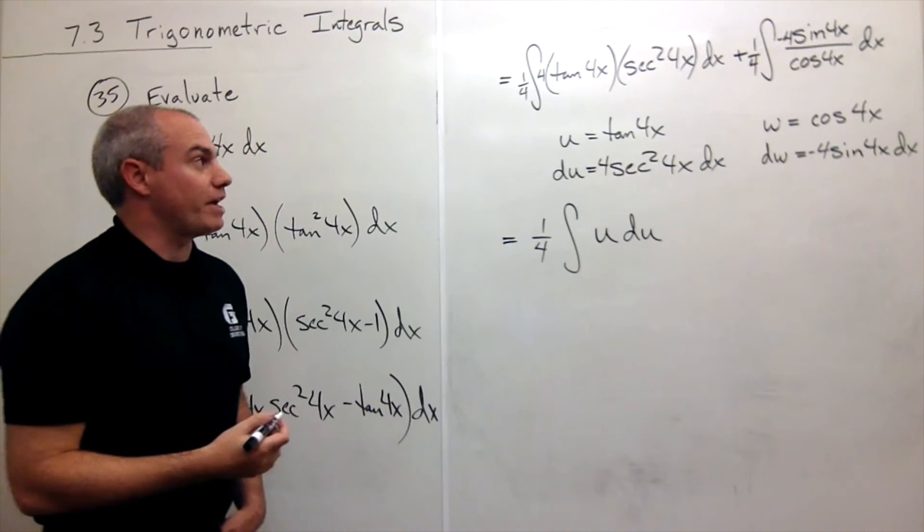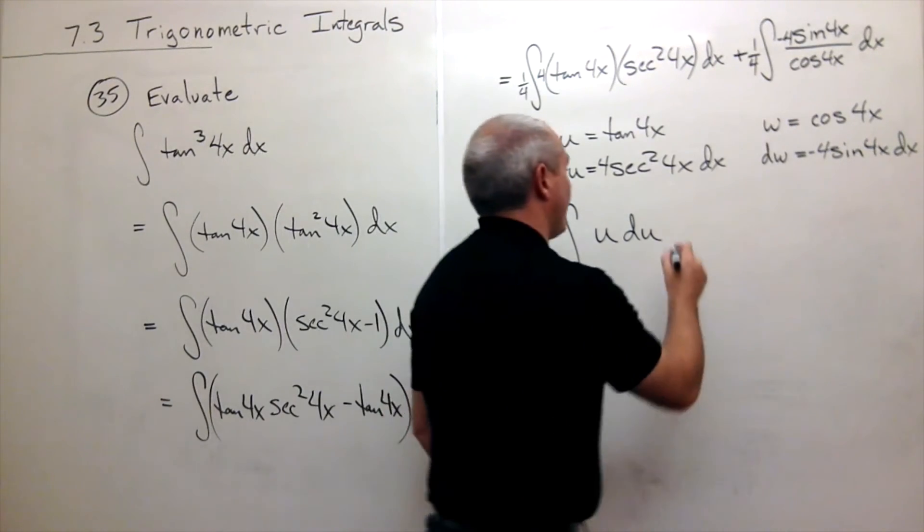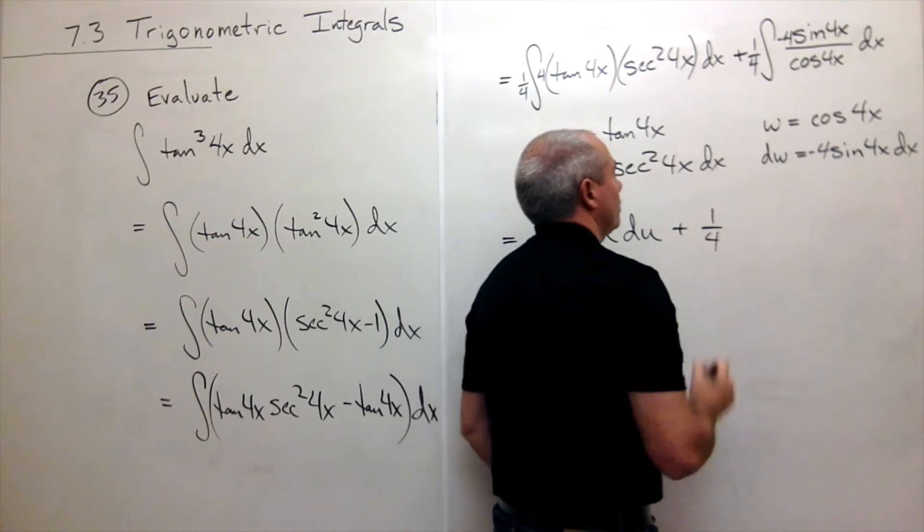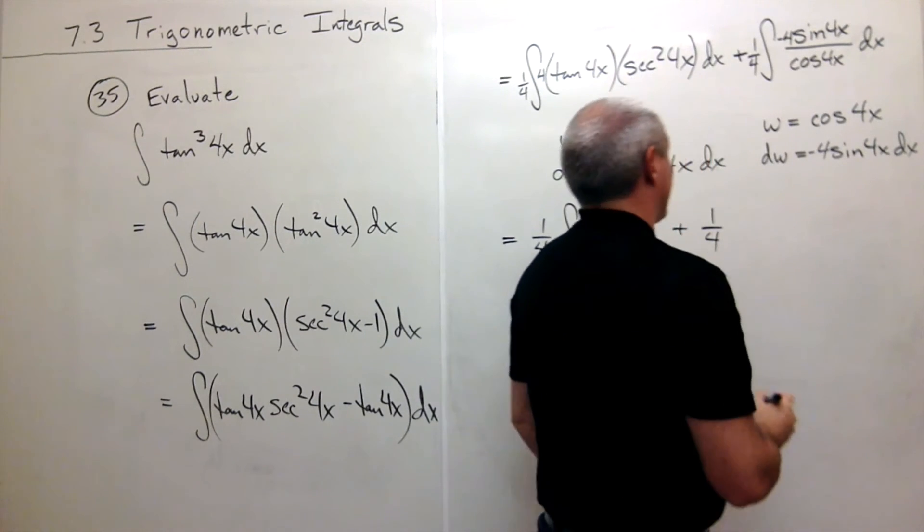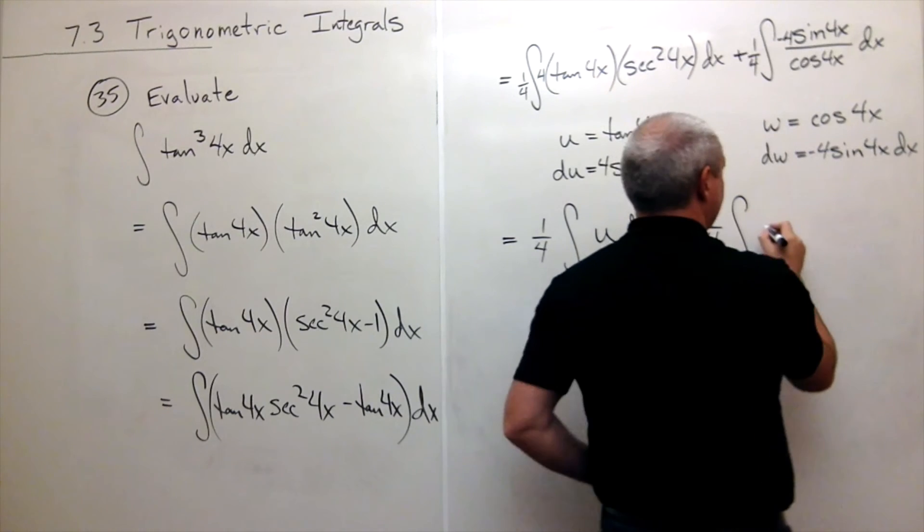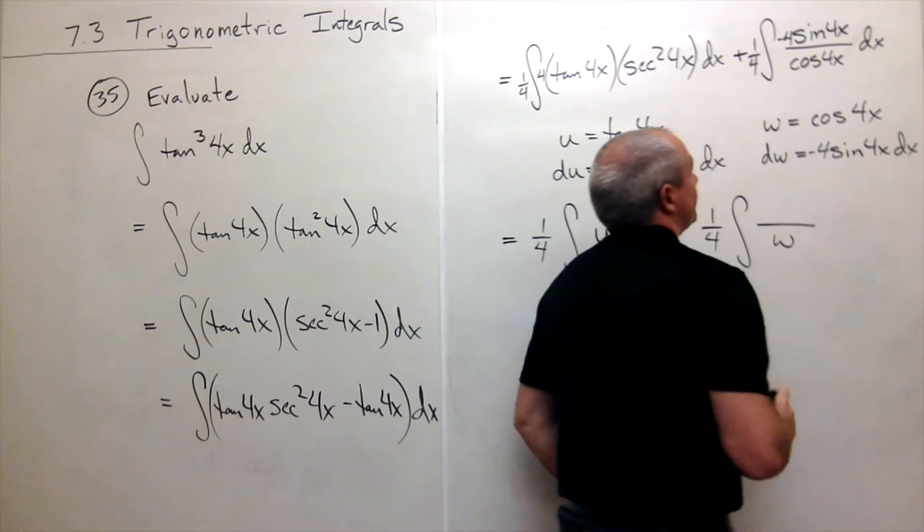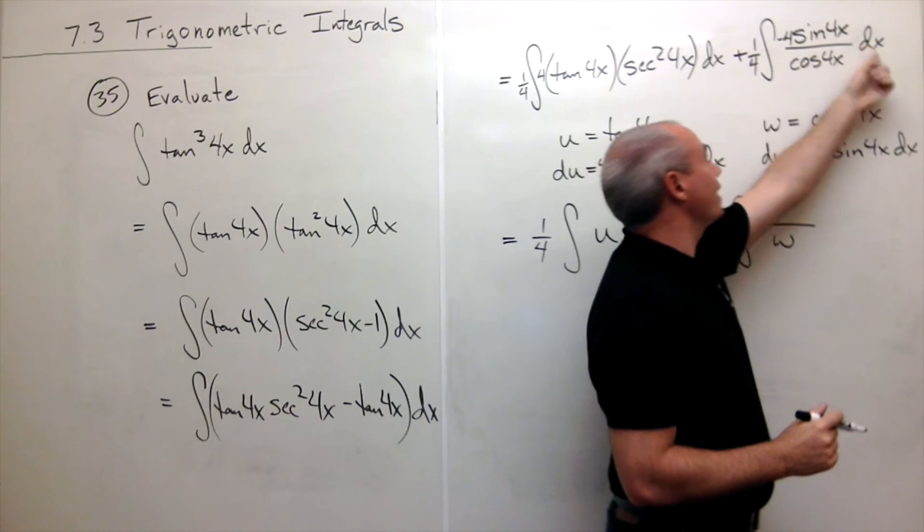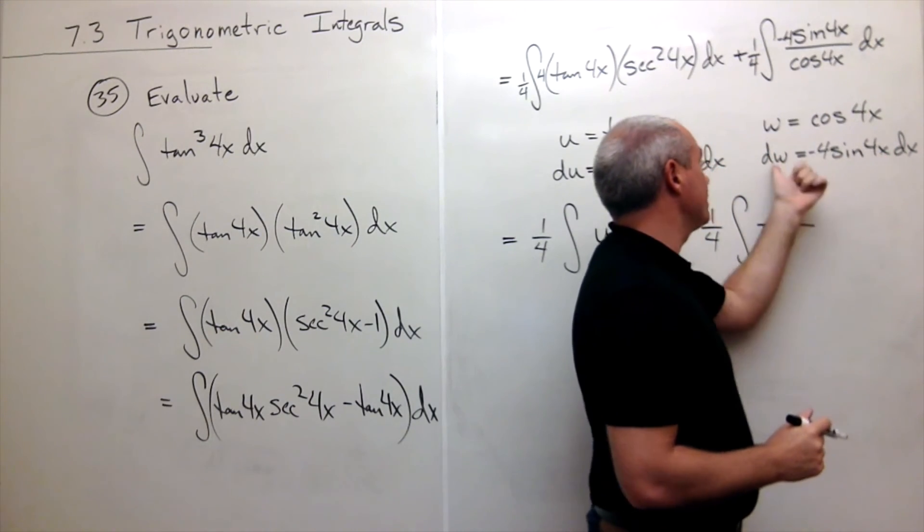And now I'm ready to make my substitution. I have a plus 1 fourth integral of, on the bottom I have w. On the top I have negative 4 sine of 4x dx. That is dw.